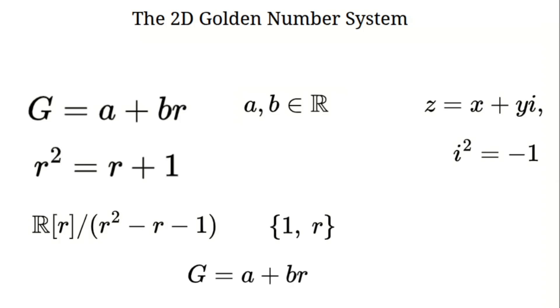So our numbers are built from 1 and R forming a two-dimensional space. Each G, that's a plus BR, becomes a point AB on a plane. The x-axis holds A, the real part, and the y-axis holds B, the golden part. This plane will show our calculations in action.